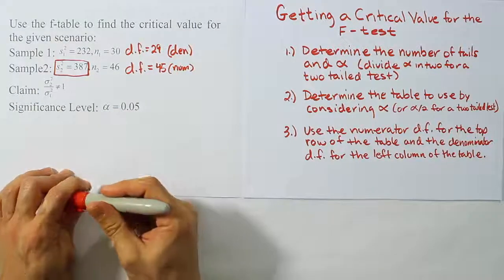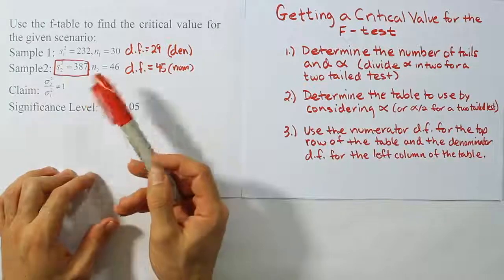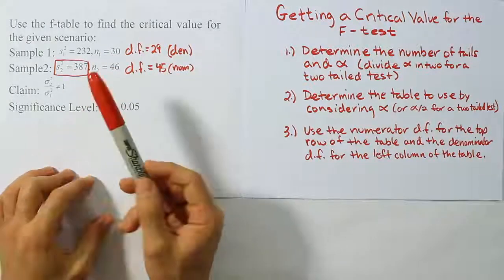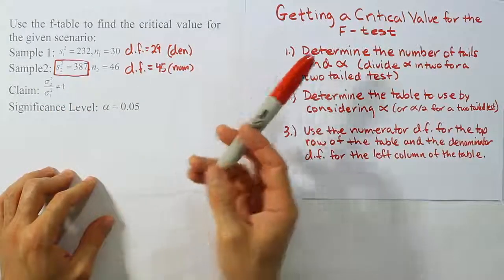Okay, so at this point, when we go to our table, we'll be armed with those values, and we'll look up the values based on that. So let's go over the steps again one more time though.